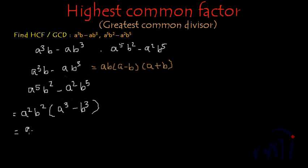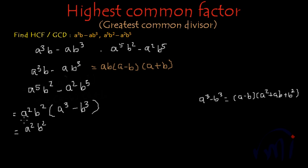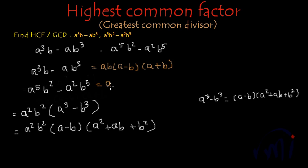So a square b square will be left as it is, and we have a formula for a cube minus b cube. a cube minus b cube equals (a minus b) multiplied by (a square plus ab plus b square). So the factors of a to the power 5 b square minus a square b to the power 5 are a square b square multiplied by (a minus b) multiplied by (a square plus ab plus b square).